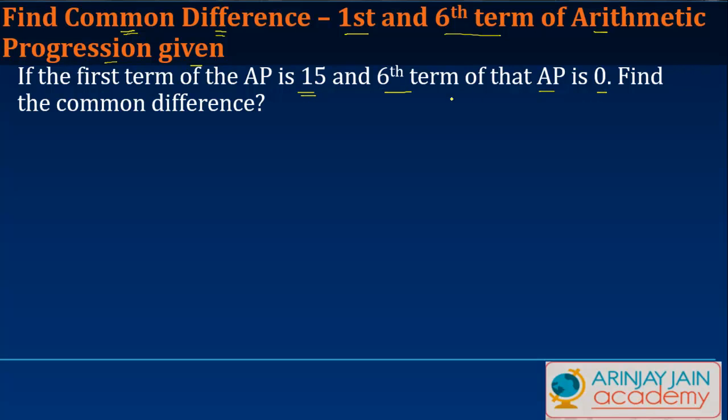Now we know that the first term of an AP, let's call it a1, is given as 15, and the sixth term of the arithmetic progression is given as 0.